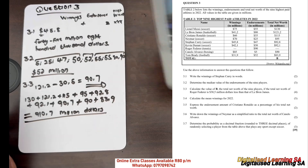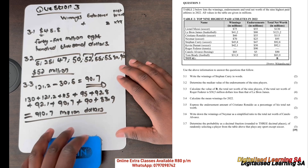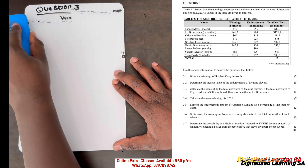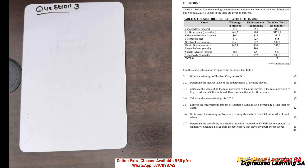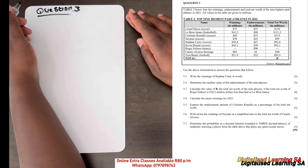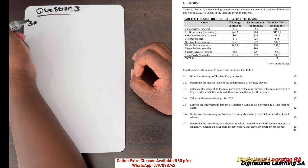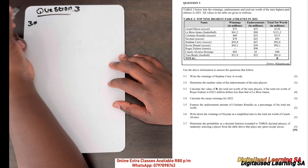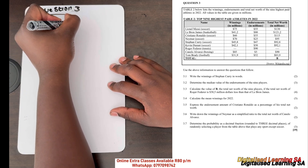That's our answer for question 3.3: b = 910.7 million dollars. Now let's move to question 3.4, which says: calculate the mean winnings for 2022. The mean is the same as the average — we add everything up and then divide by the total number of players.